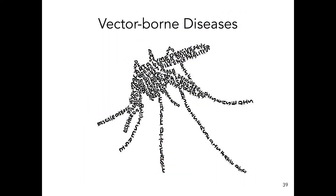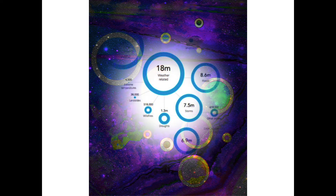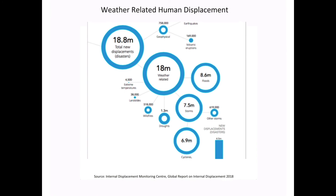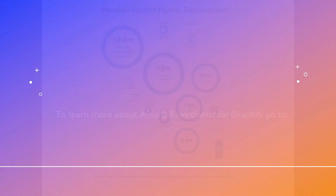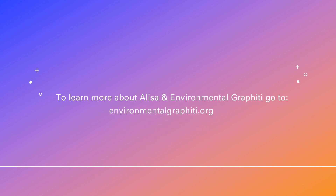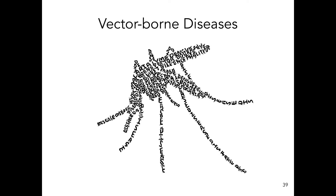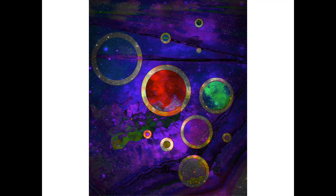Thank you to Alisa Singer, and to Pottington Bear at soundofpicture.com for the music 'Tender and Curious.' If you want to learn more about Alisa Singer and her project Environmental Graffiti, you can check out her work at environmentalgraffiti.org — that's graffiti spelled with a 'ph.' And if you're curious about the Climate Music Project, you can find out more at climatemusic.org. My name is Kaya Sakamoto and you've been listening to Climate Vibes.